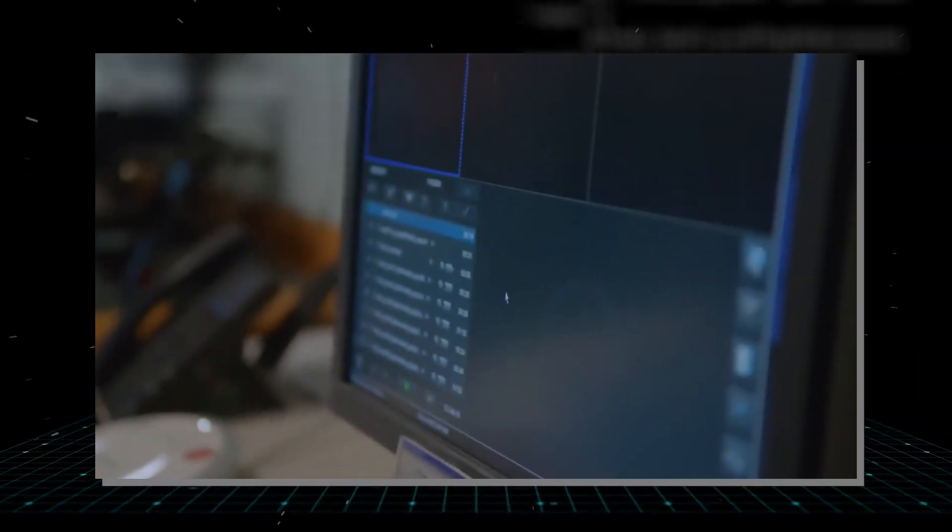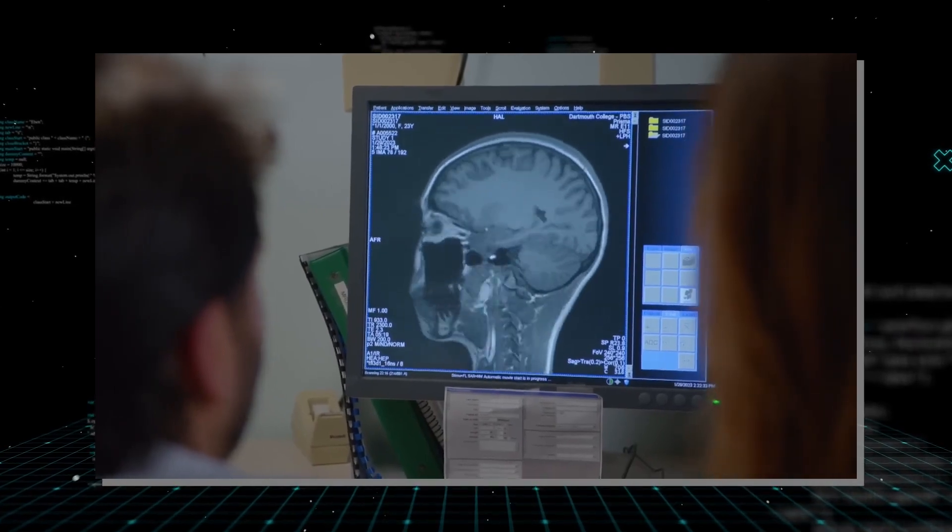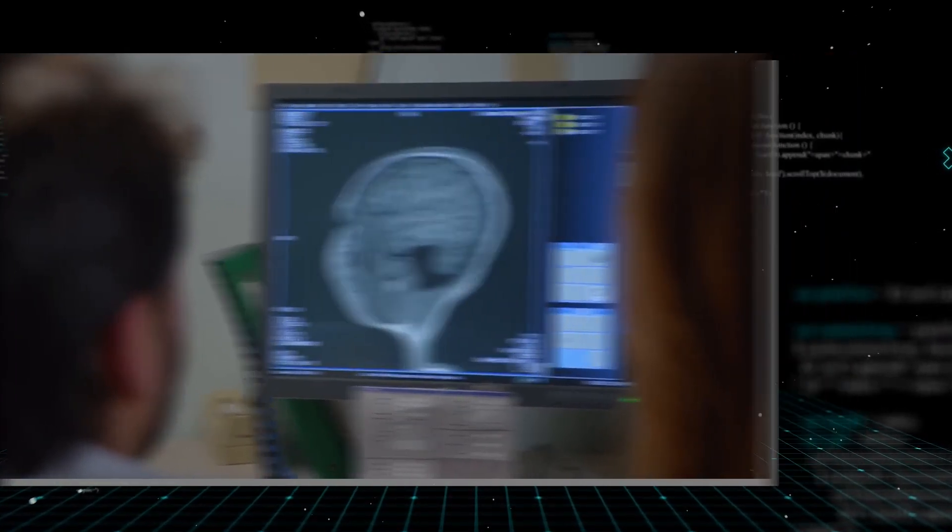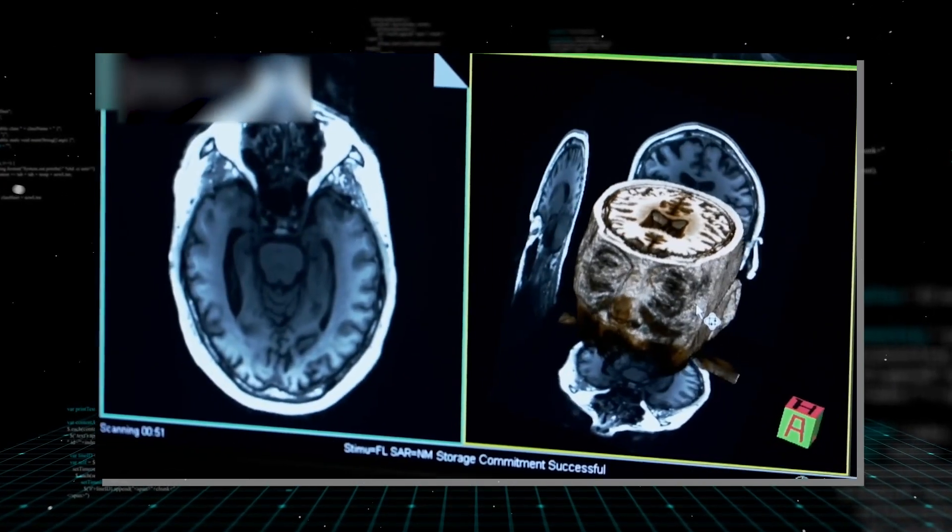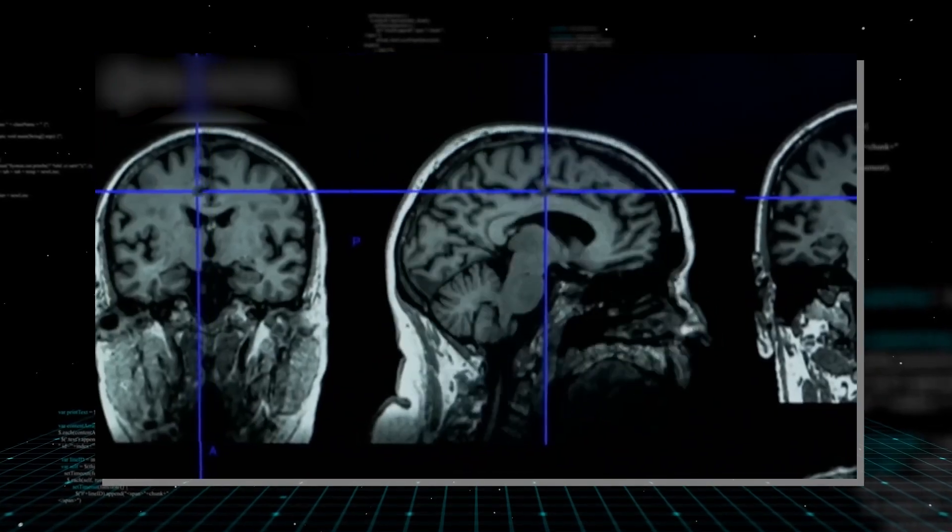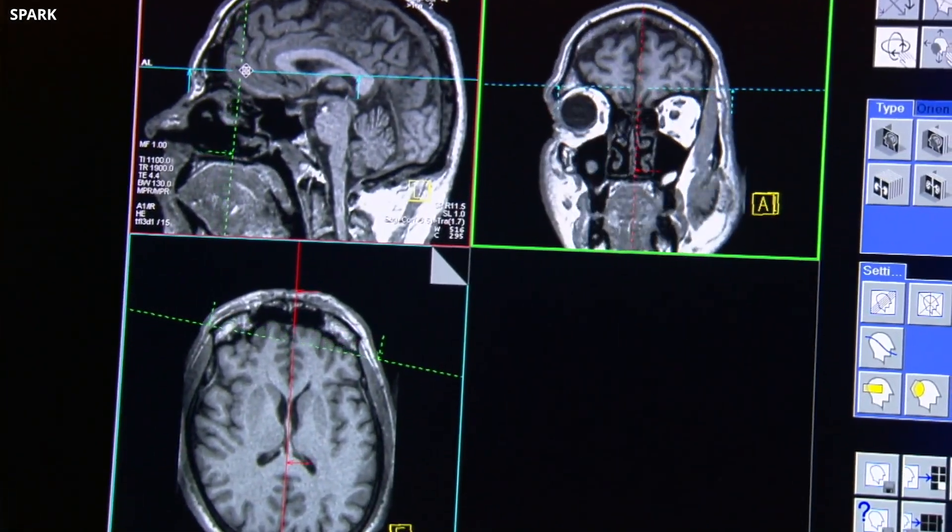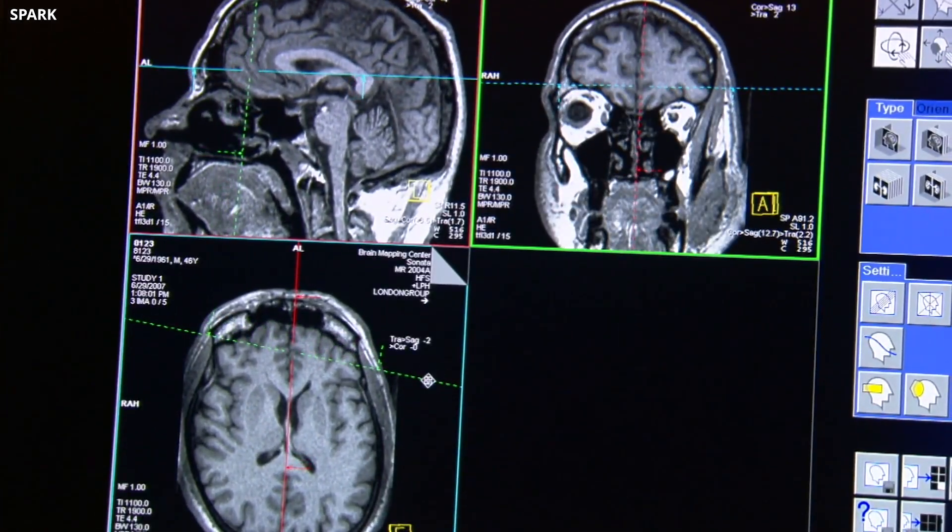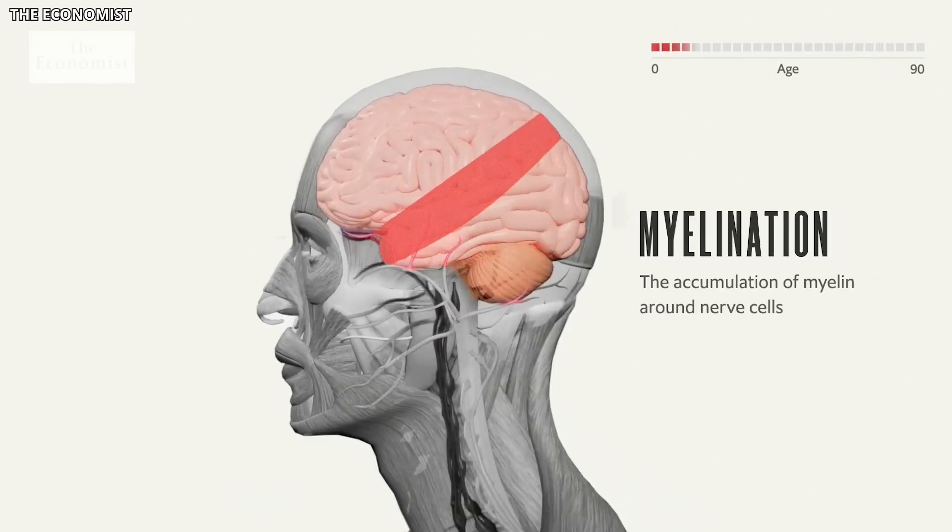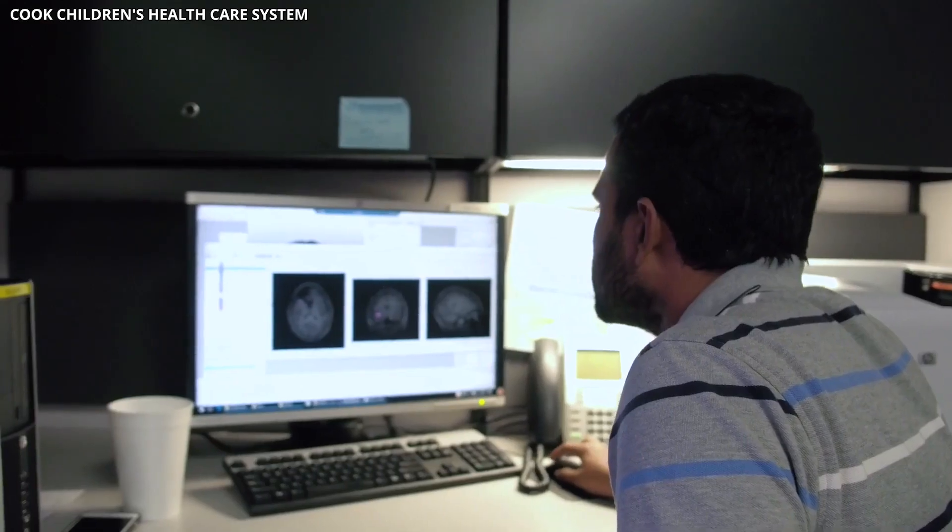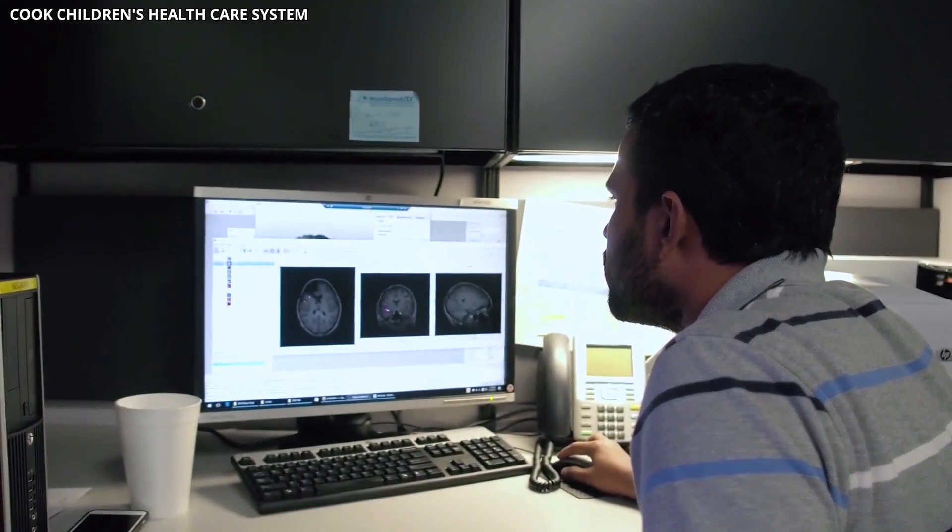The research highlights the brain's sophisticated ability to represent both the presence and absence of stimuli, with zero acting as a critical bridge between these two concepts. With more research, we will discover how the brain's representation of zero interacts with other cognitive functions, such as memory, attention, and decision-making.